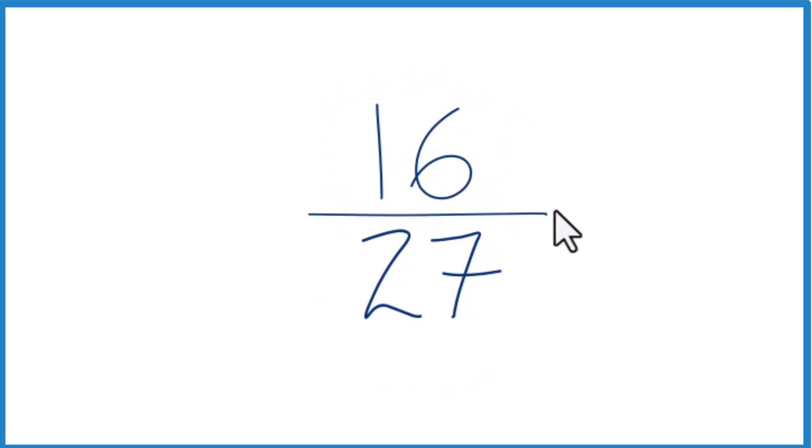To do that, we need to find a common factor, something that goes into 16 and 27 evenly. So a whole number that goes into both 16 and 27.